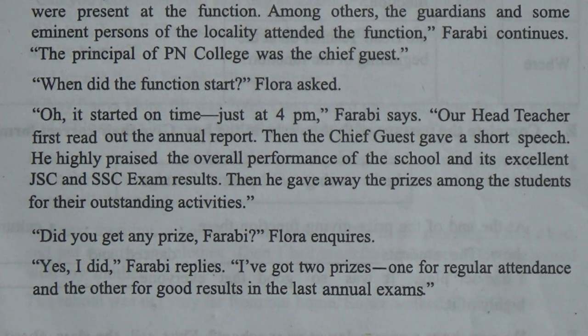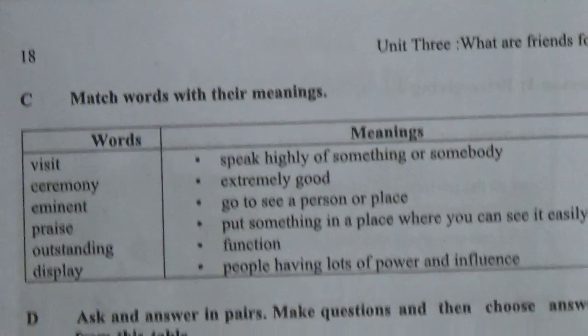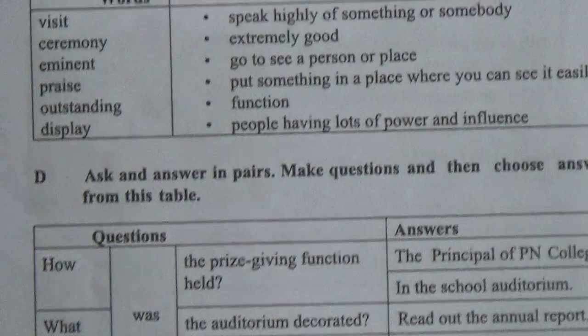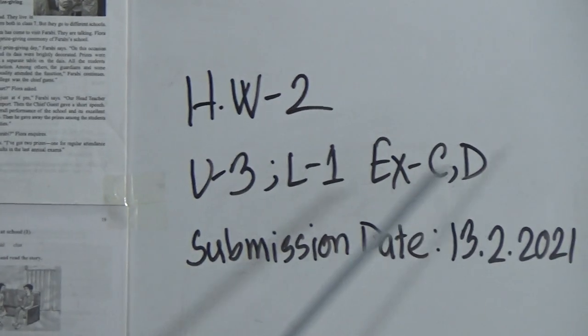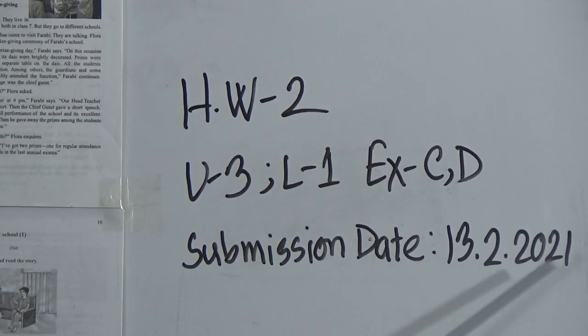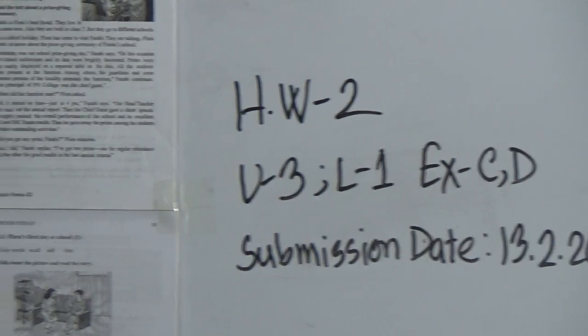Dear students, this is Task A and Task B. Task C and Task D are for your homework. Here you may see: Homework 2, Unit 3, Lesson 1, Exercise C and D. Submission date: 13 February 2021. So C and D would be your homework, so be alert about this.